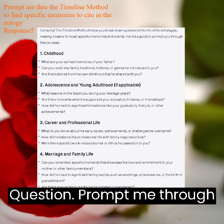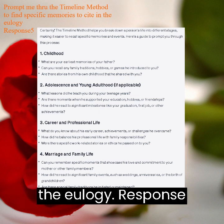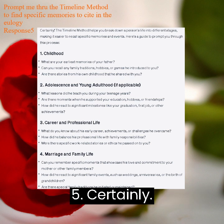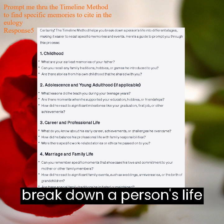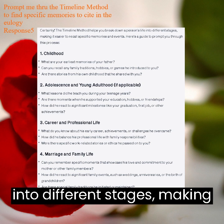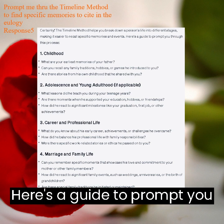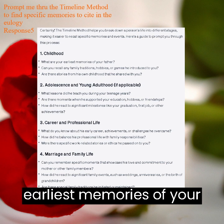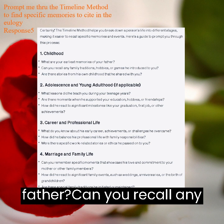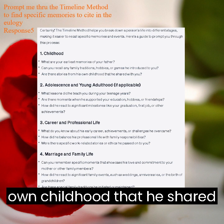Question: Prompt me through the timeline method to find specific memories to cite in the eulogy. Response 5. Certainly. The timeline method helps you break down a person's life into different stages, making it easier to recall specific memories and events. Here's a guide to prompt you through this process. 1. Childhood: what are your earliest memories of your father? Can you recall any family traditions, hobbies, or games he introduced to you? Are there stories from his own childhood that he shared with you?